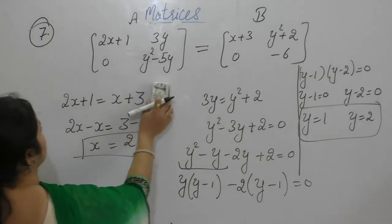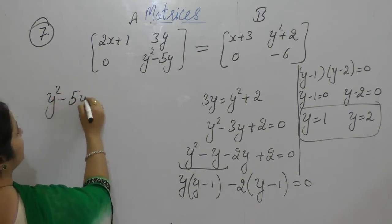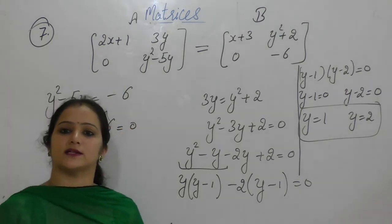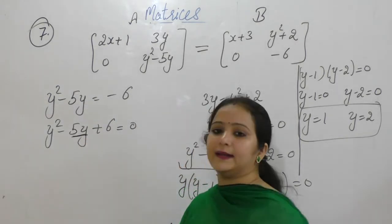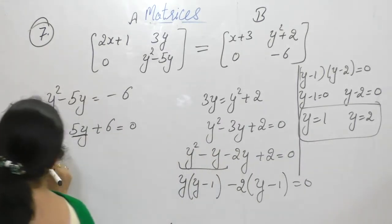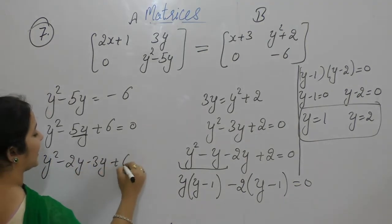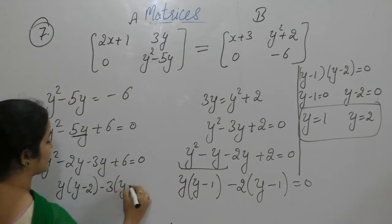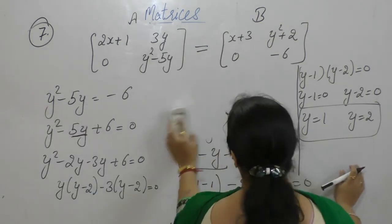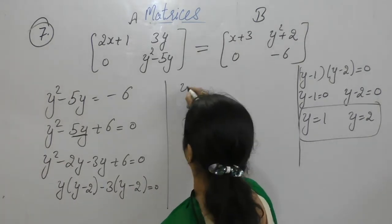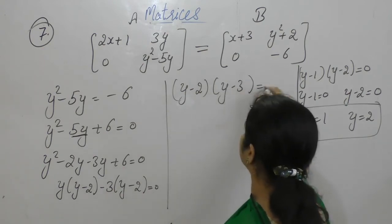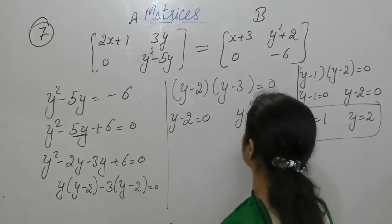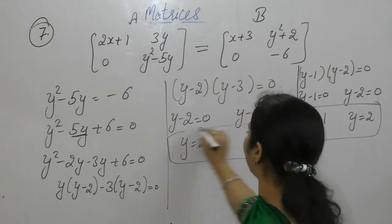The next equation is y² - 5y = -6, giving y² - 5y + 6 = 0. Possible factors of 6 are 1×6 and 2×3; since -2 + (-3) = -5, we write y² - 2y - 3y + 6 = 0. Factoring: y(y - 2) - 3(y - 2) = 0, so (y - 2)(y - 3) = 0, giving y = 2 or y = 3.